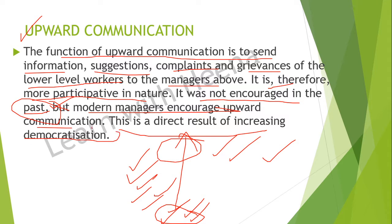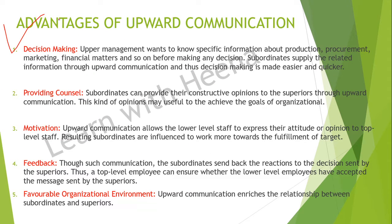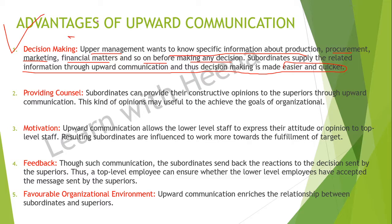This is the direct result of increasing democratization. Now, the first advantage of upward communication is decision making. Upper management wants to know specific information about production, procurement, marketing, and financial matters before making any decision. The information is supplied by middle and lower level management, which makes decision making easier and quicker — they don't have to collect information from anywhere else because their subordinates do this work and hand over the information to them.